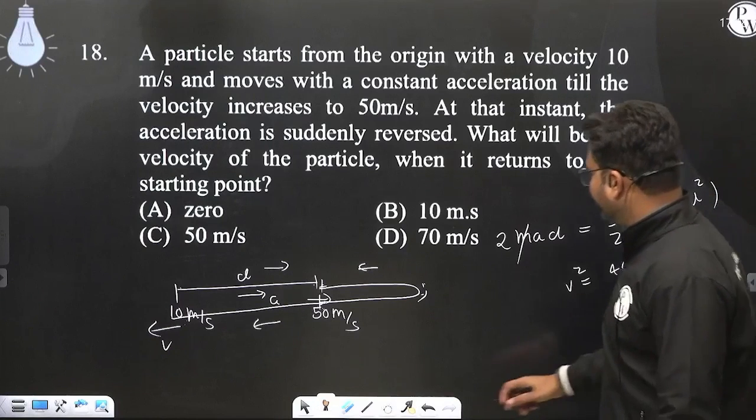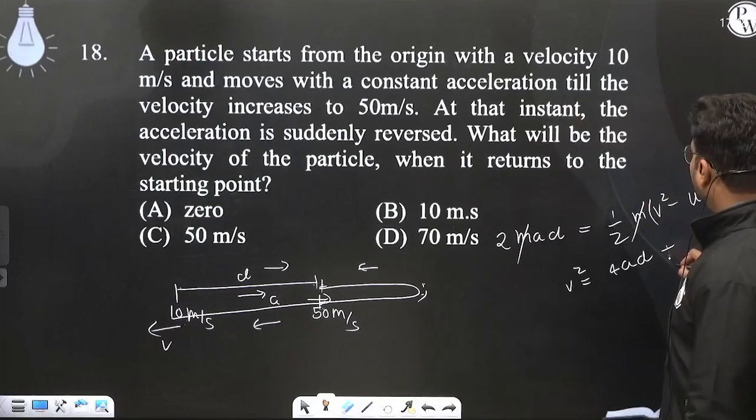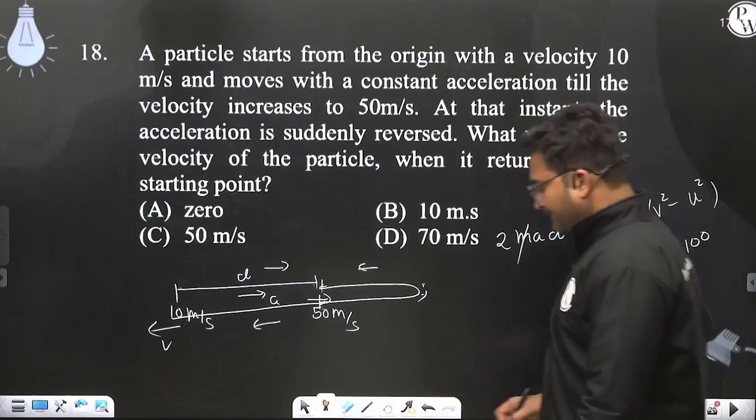Plus u square which is what? So which is u square which is 100 because initial was 100. Okay.